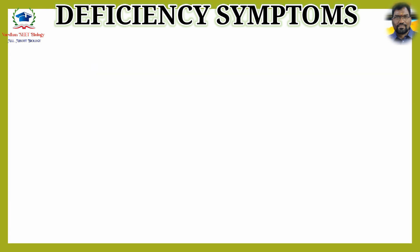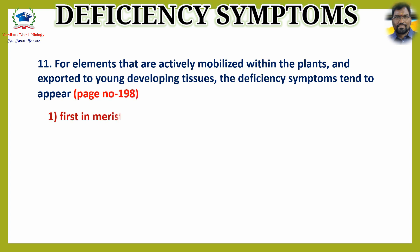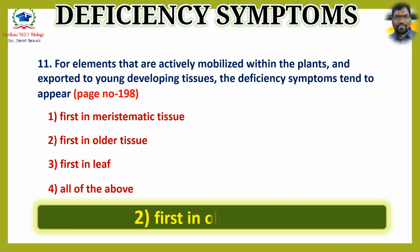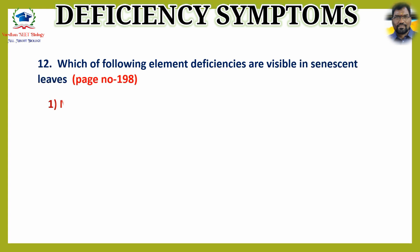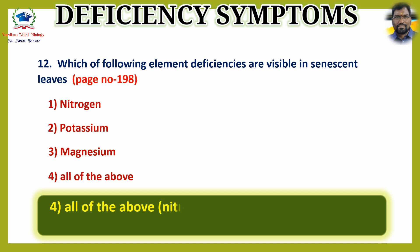Question 11: For elements that are actively mobilized within the plants and exported to young developing tissues, the deficiency symptoms tend to appear — options are 1) first in meristematic tissue, 2) first in older tissue, 3) first in leaf, 4) all of the above. The answer is option 2: first in older tissue. Question 12: Which of the following element deficiencies are visible in senescent leaves? The answer is option 4: all of the above — nitrogen, potassium, and magnesium.